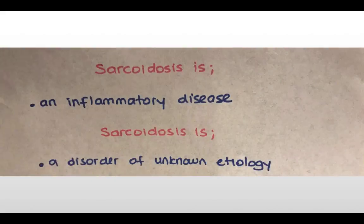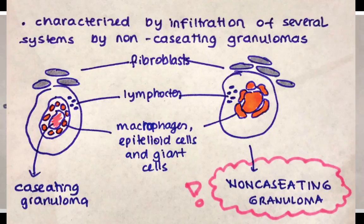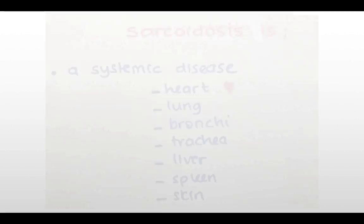So what is sarcoidosis? It's an inflammatory disease of unknown etiology and it is characterized by infiltration of several organ systems by non-caseating granulomas.